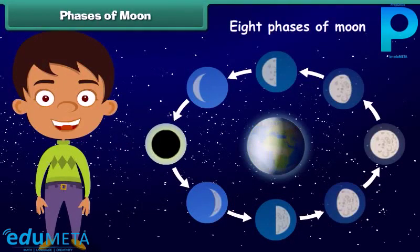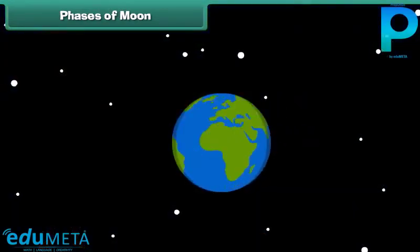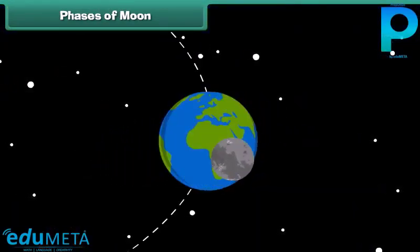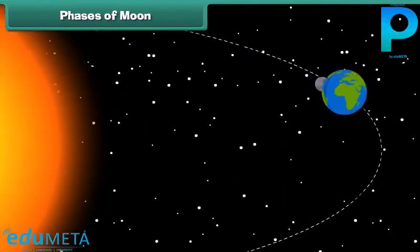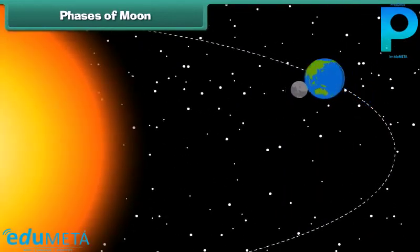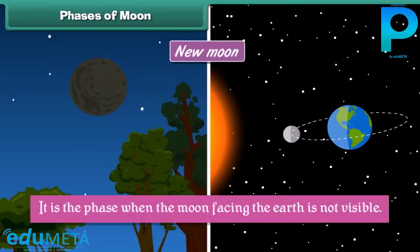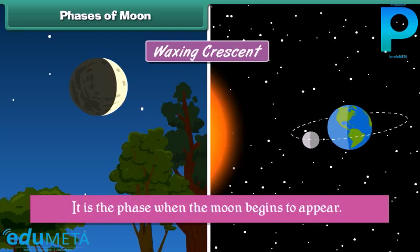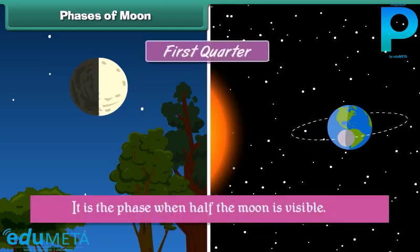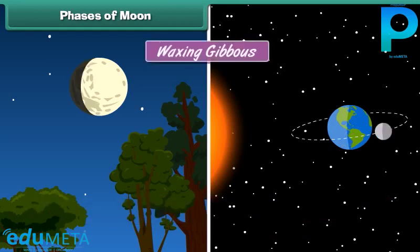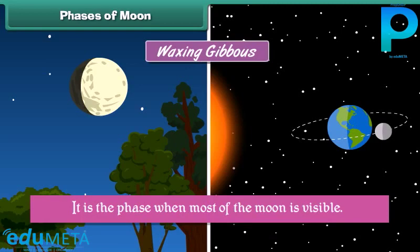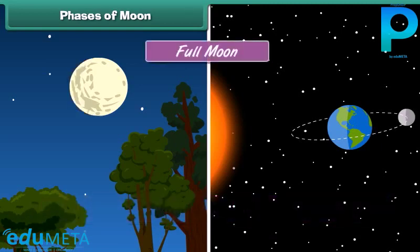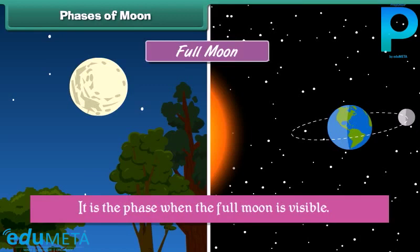The Moon passes through 8 phases in a month. The Moon's revolution around the Earth and Earth's revolution around the Sun cause the following phases of Moon. New Moon: the phase when the Moon facing the Earth is not visible. Waxing Crescent: the phase when the Moon begins to appear. First Quarter: the phase when half the Moon is visible. Waxing Gibbous: the phase when most of the Moon is visible. Full Moon: the phase when the full Moon is visible.